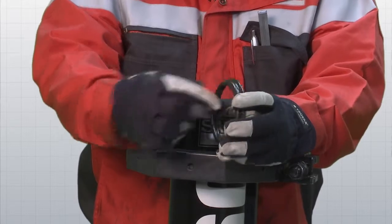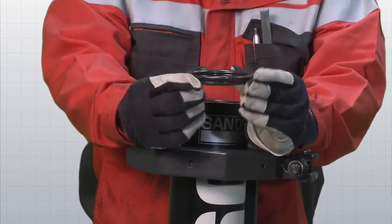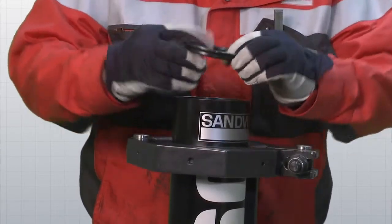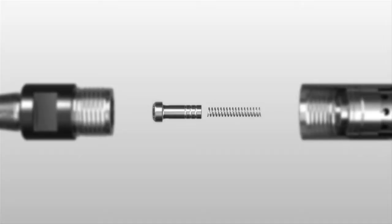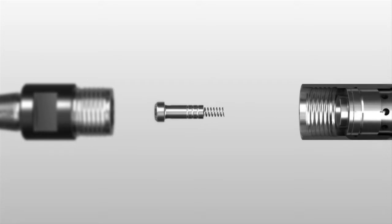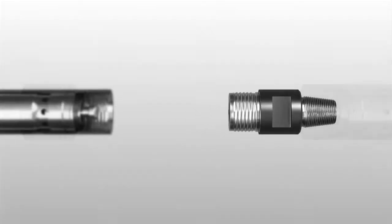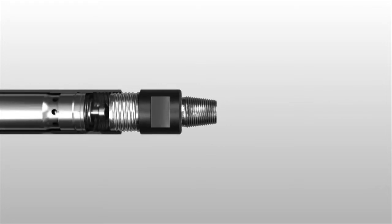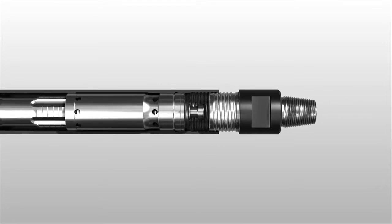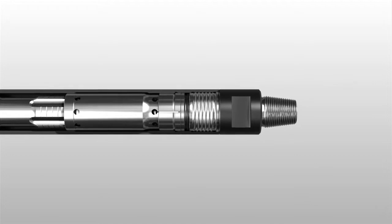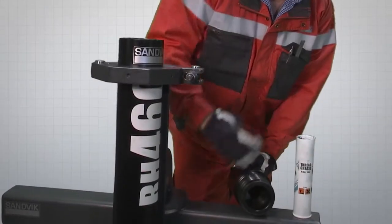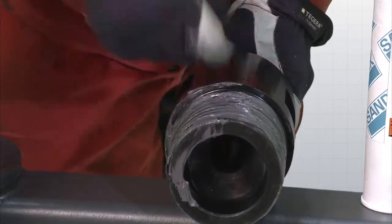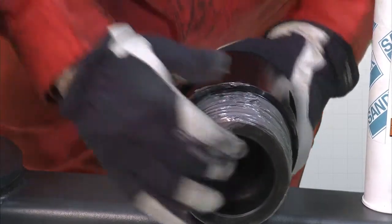Fit the make-up ring with the small diameter downwards. Fit the check valve spring and the check valve dart. First, fit the top sub without thread grease to check the standoff. If there's no gap, it's likely that a part is missing. If there is sufficient standoff, remove the top sub, apply thread grease and reinstall it.